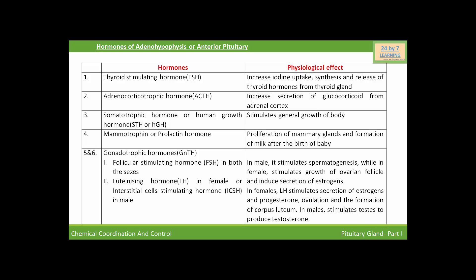Next we are going to discuss gonadotropic hormones, also called gonadotropins, as they stimulate gonadal activity. The anterior pituitary releases the following gonadotropic hormones: number one is follicle stimulating hormone, produced in both males and females; second is the luteinizing hormone, which is produced in females, or interstitial cell stimulating hormone, which is produced in males. Follicle stimulating hormone in males stimulates spermatogenesis.